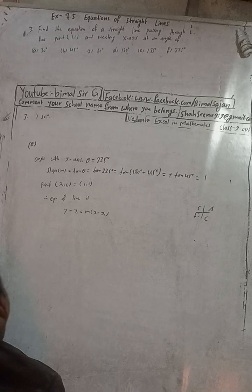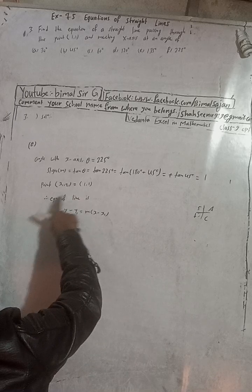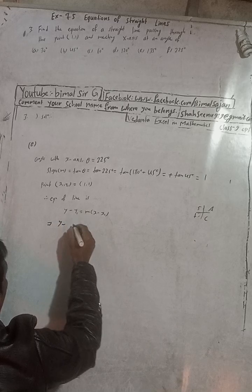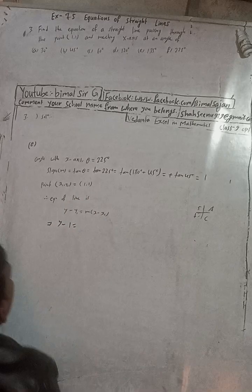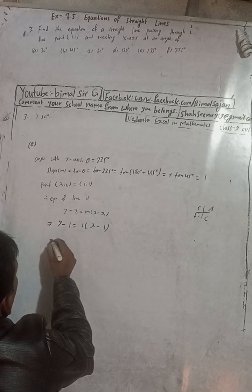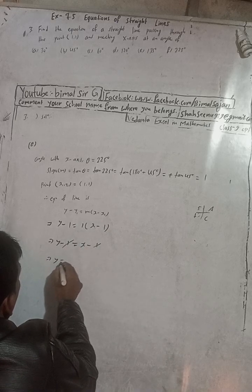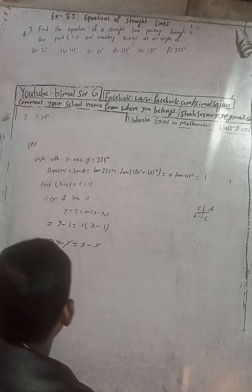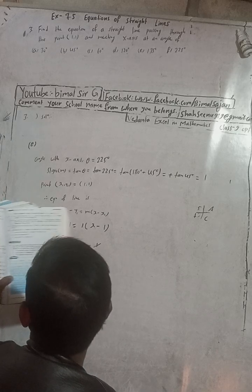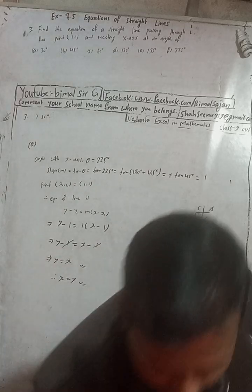The point is (1, 1), so x1, y1 equals 1, 1. Using y minus y1 equals m into x minus x1: y minus 1 equals 1 into (x minus 1), so y minus 1 equals x minus 1, and the minus 1s cancel giving y equals x. The book answer is y equals x, which matches.